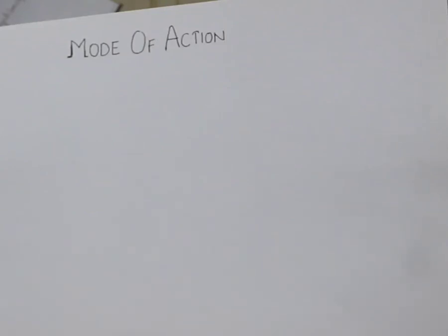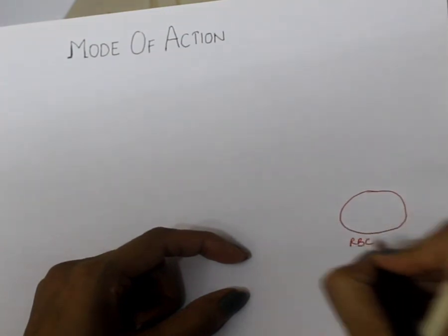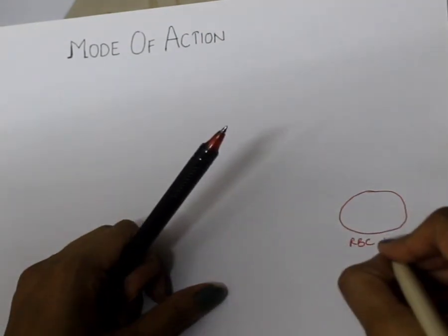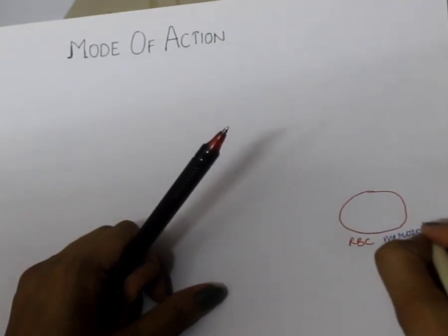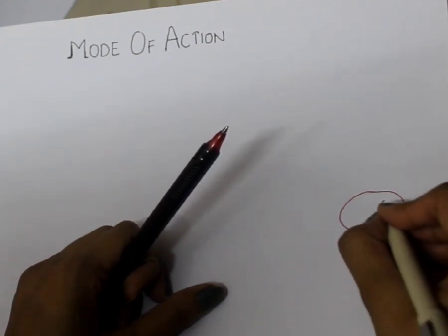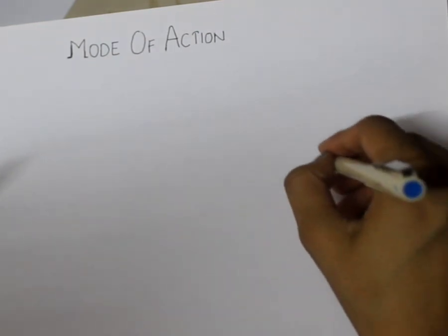In the previous lectures, we discussed the life cycle of malaria. We saw that in the RBC, the stage of plasmodium which affects humans is known as the merozoite stage. The merozoite stage of plasmodium enters into the RBC, and this stage will start to destroy the RBC.